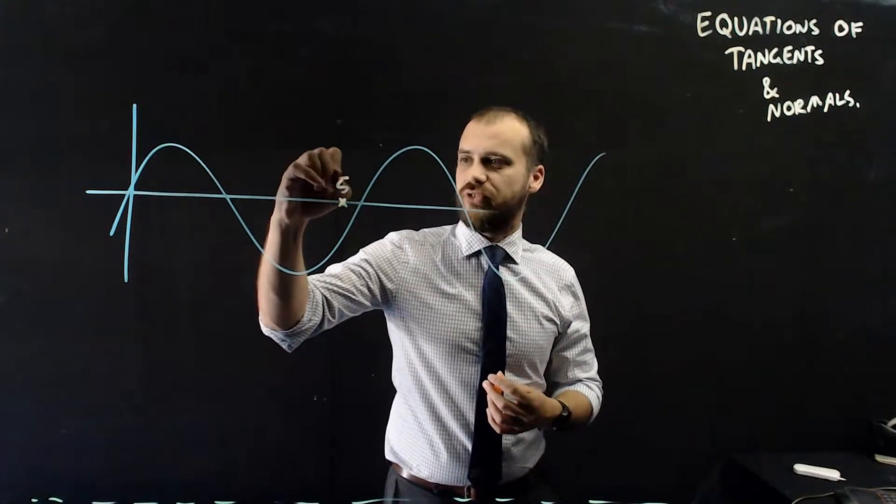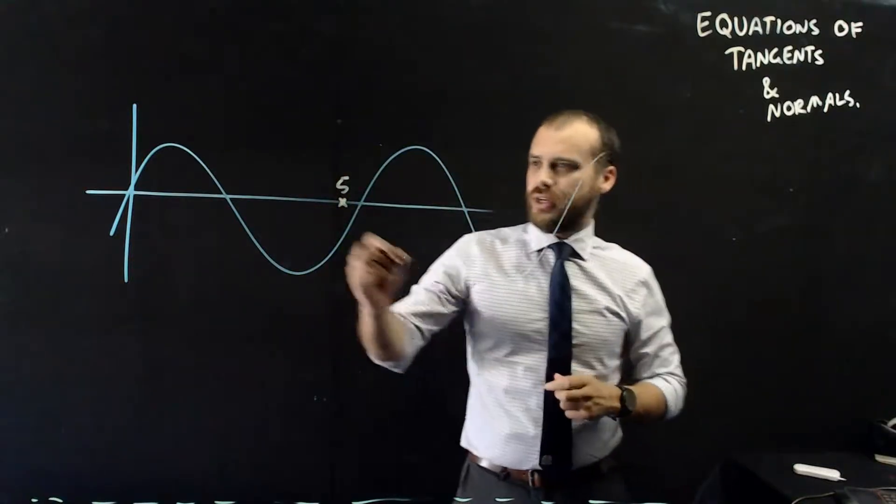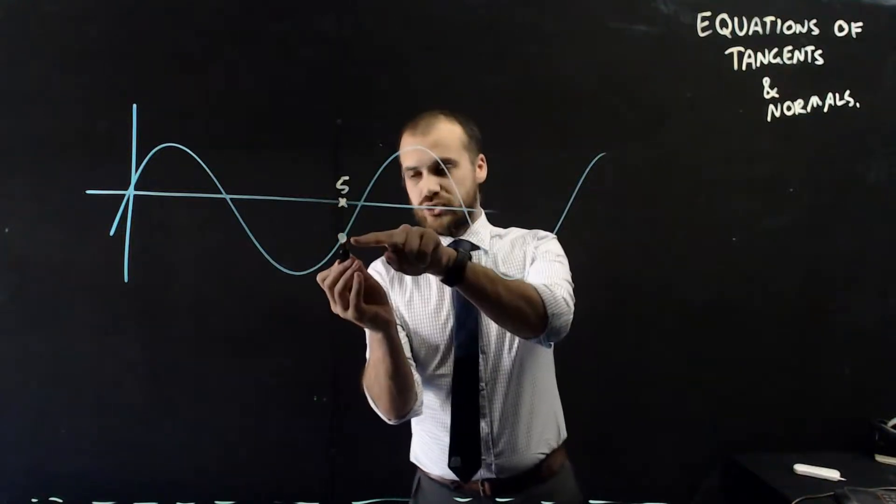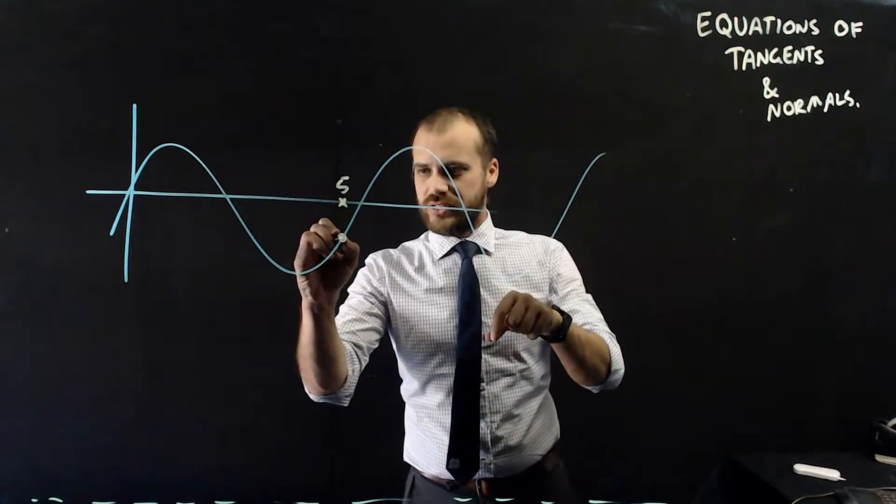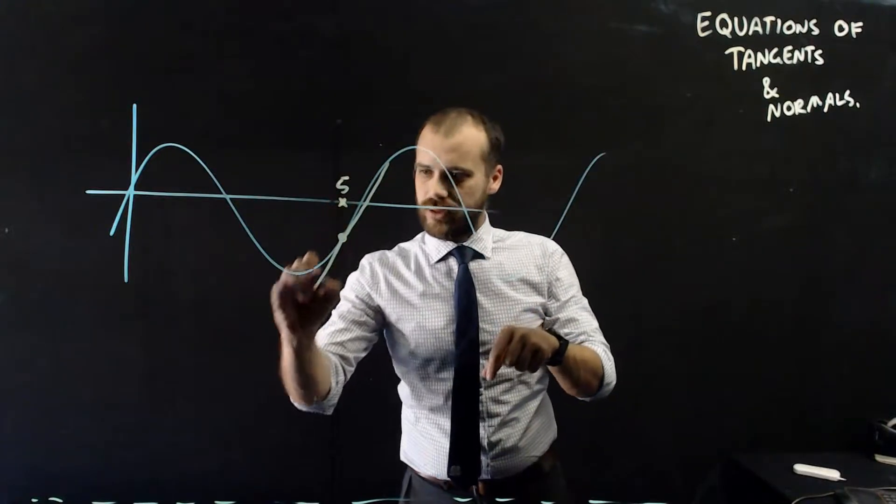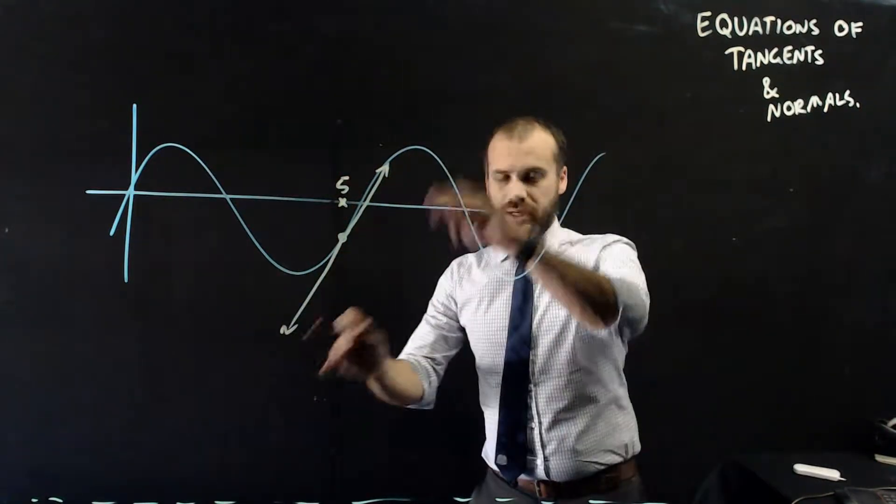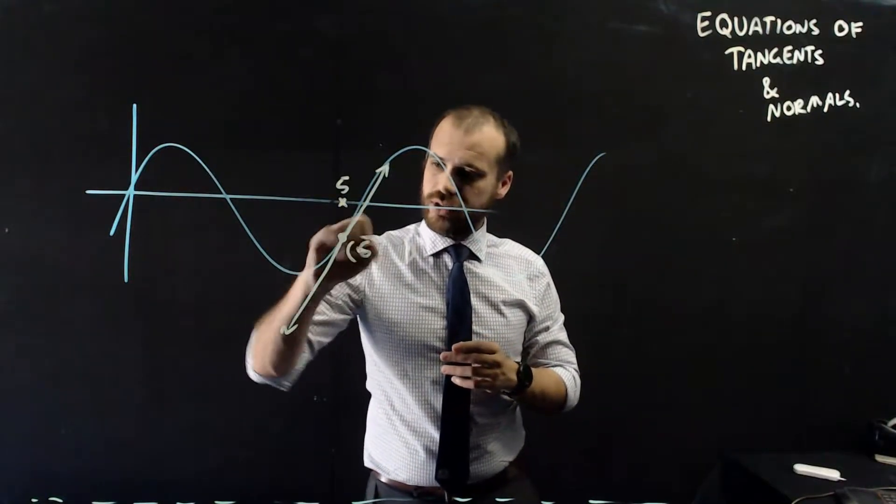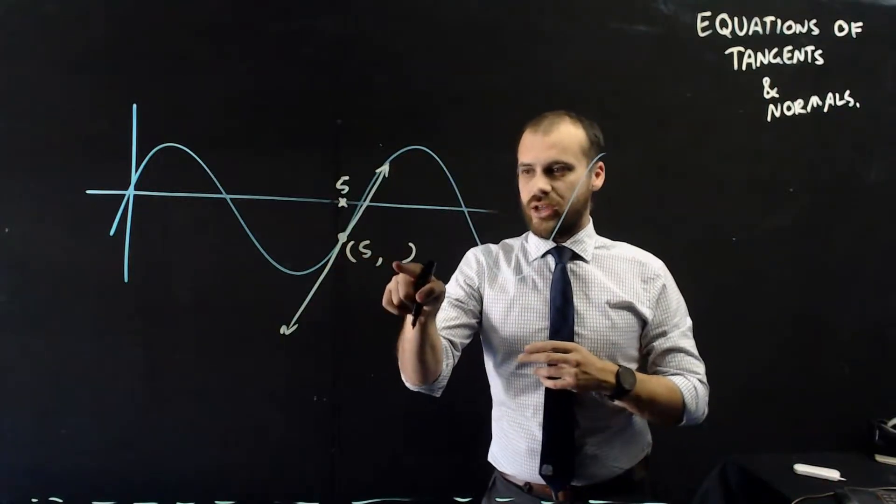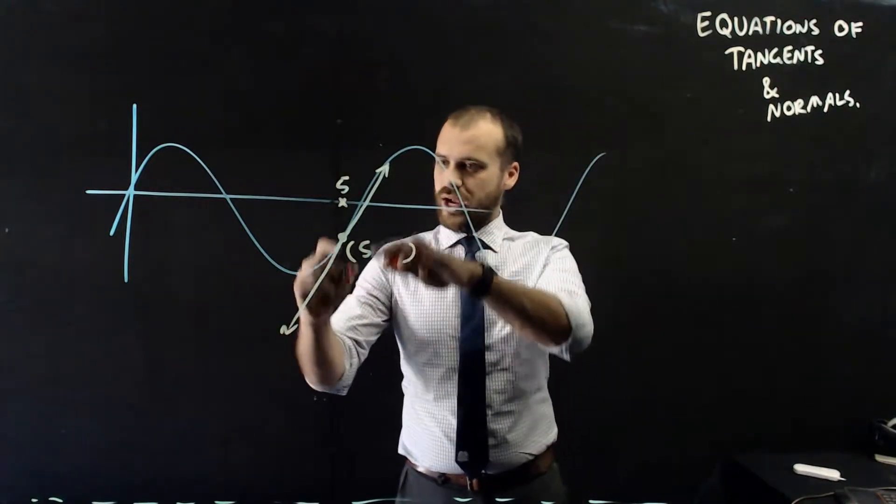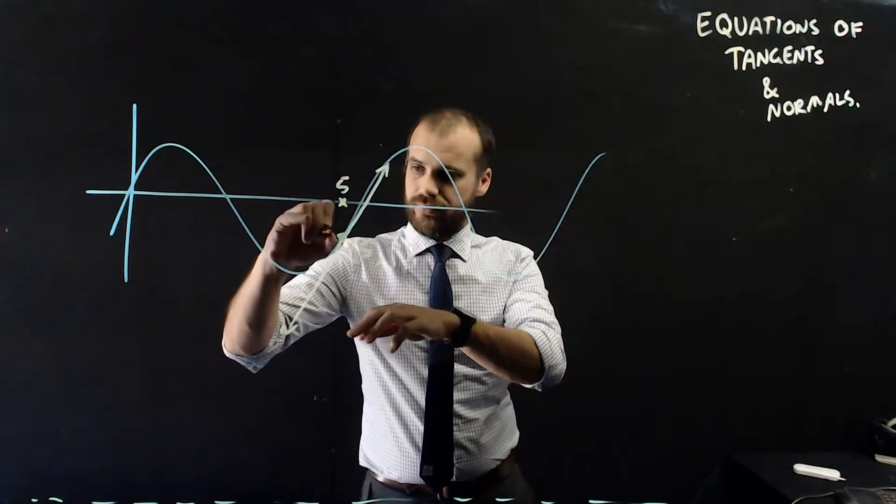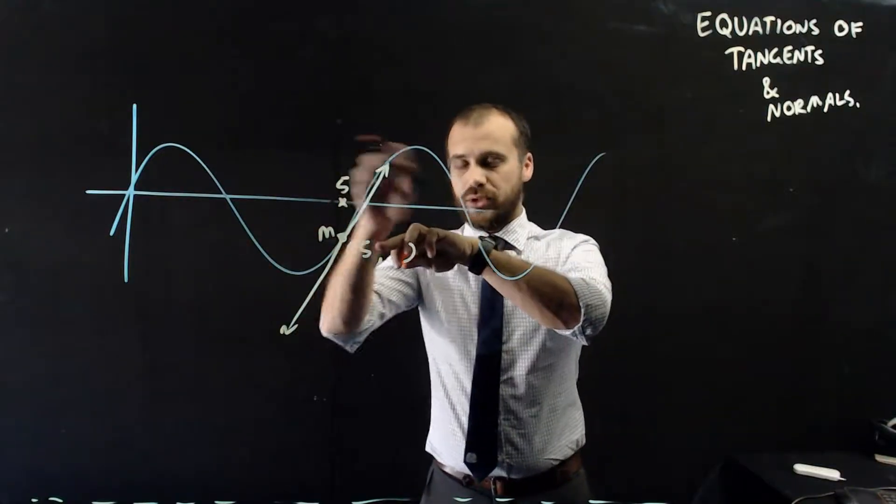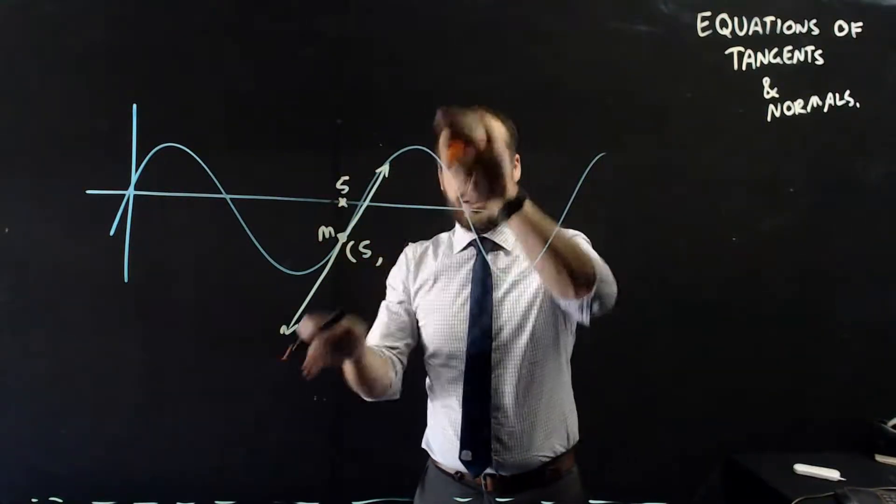So I'm going to just say that this is x equals 5. If that's x equals 5, what I'm trying to find is a straight line that just touches this function at that point and heads off there. To do that, I need to know two things. I need to know the coordinates of that point, so 5 something, but I also need to know the gradient at that point, because the gradient of that point of the blue function is going to be equal to the gradient of our tangent.